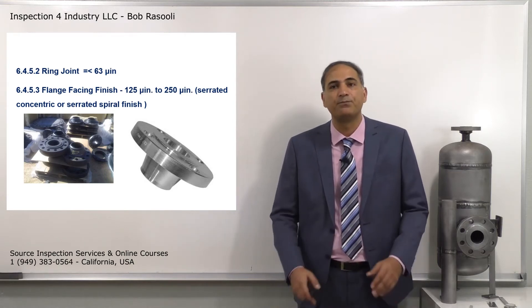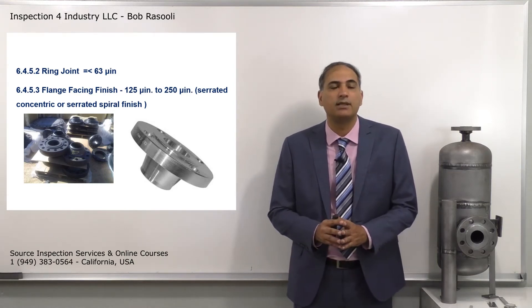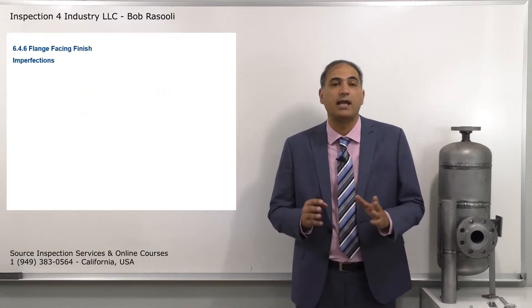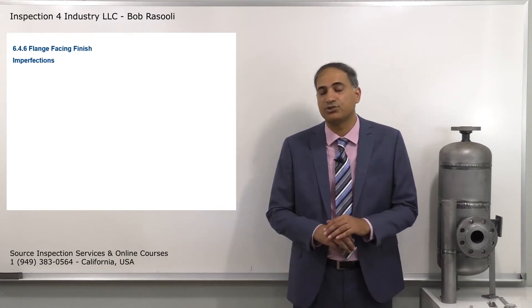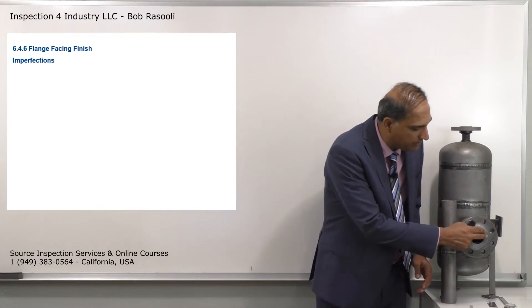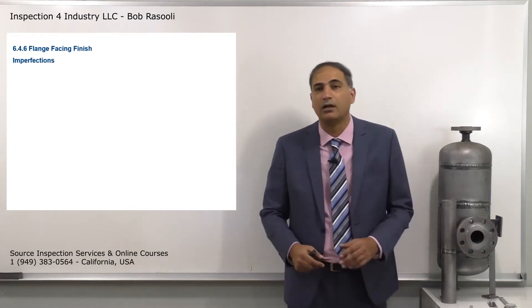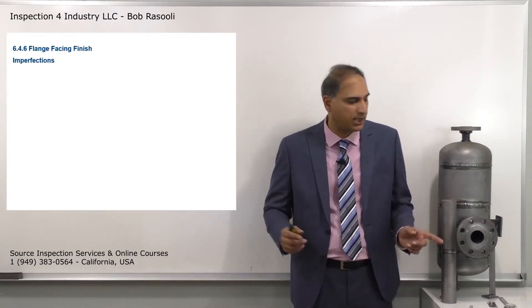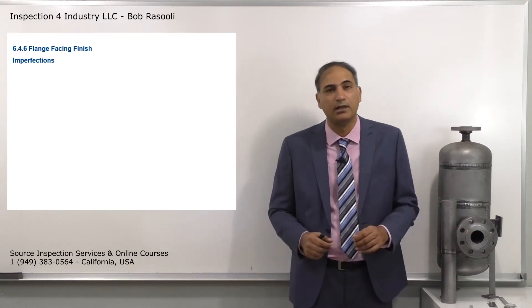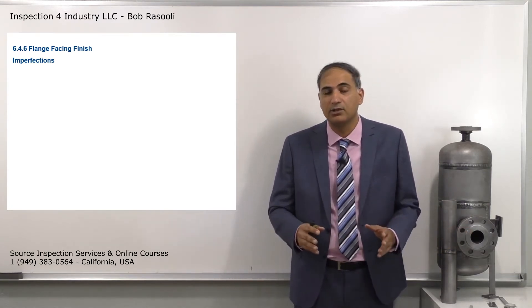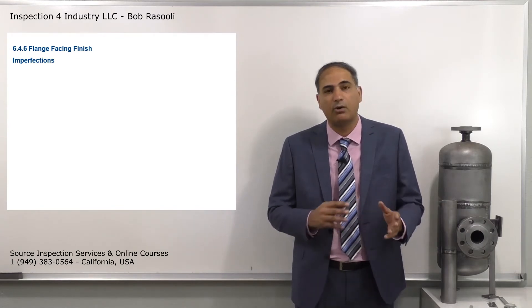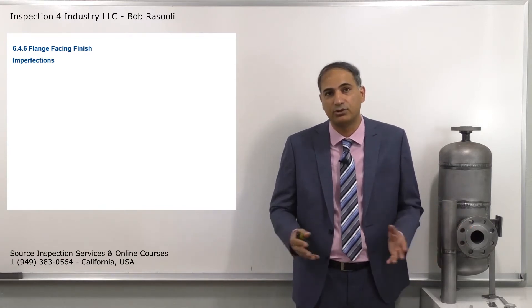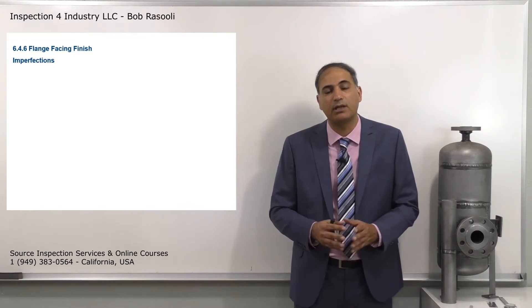The next requirement is 6.4.6 - flange facing finish imperfections. This happens a lot in the industry. You're going to perform a visual inspection on the flange facing on process piping, pressure vessels, or even storage tanks. You can see there are scratches, cuts, and damage. We need a standard to evaluate, accept, or reject flanges - for example, a new flange damaged in shipping.